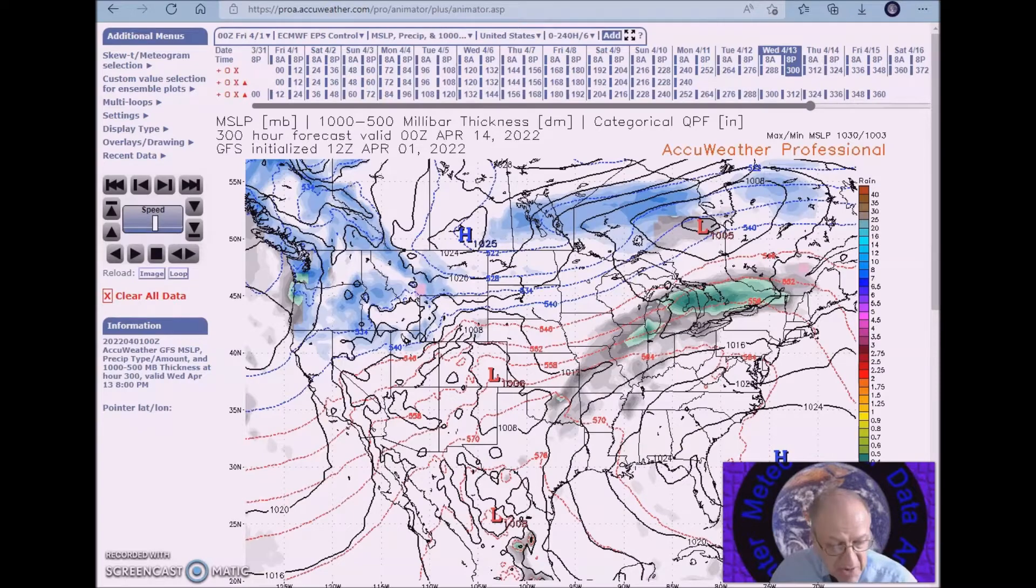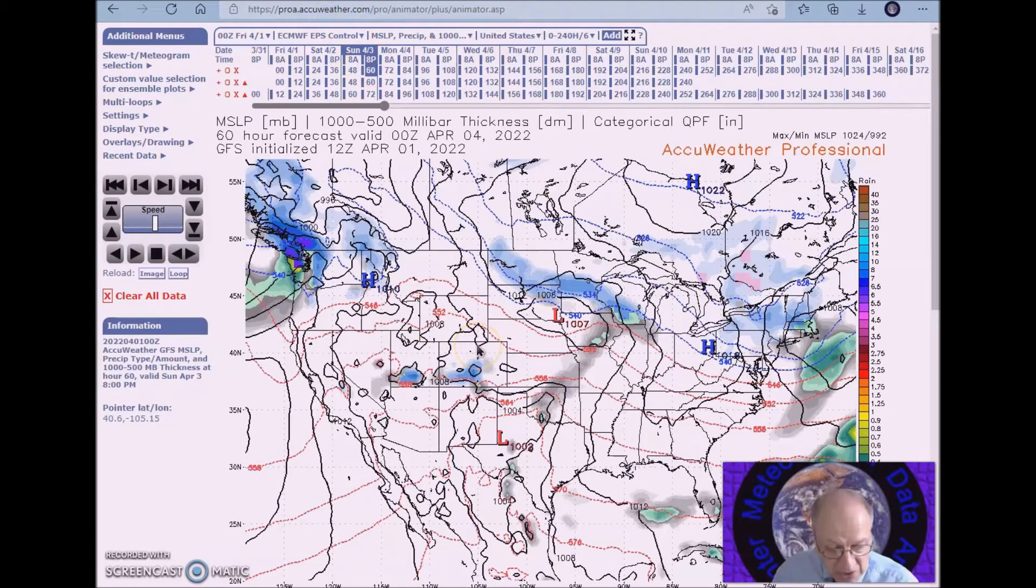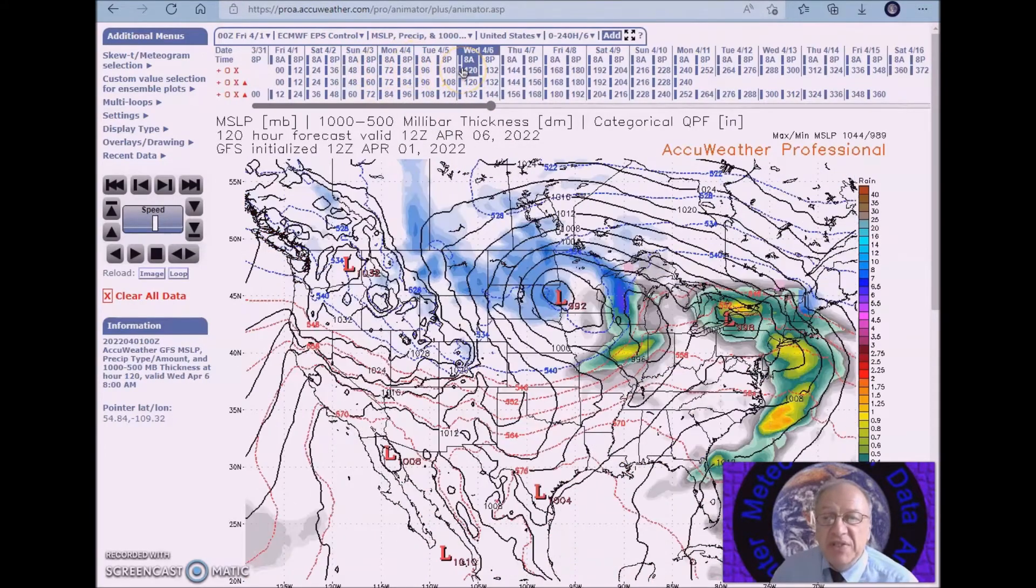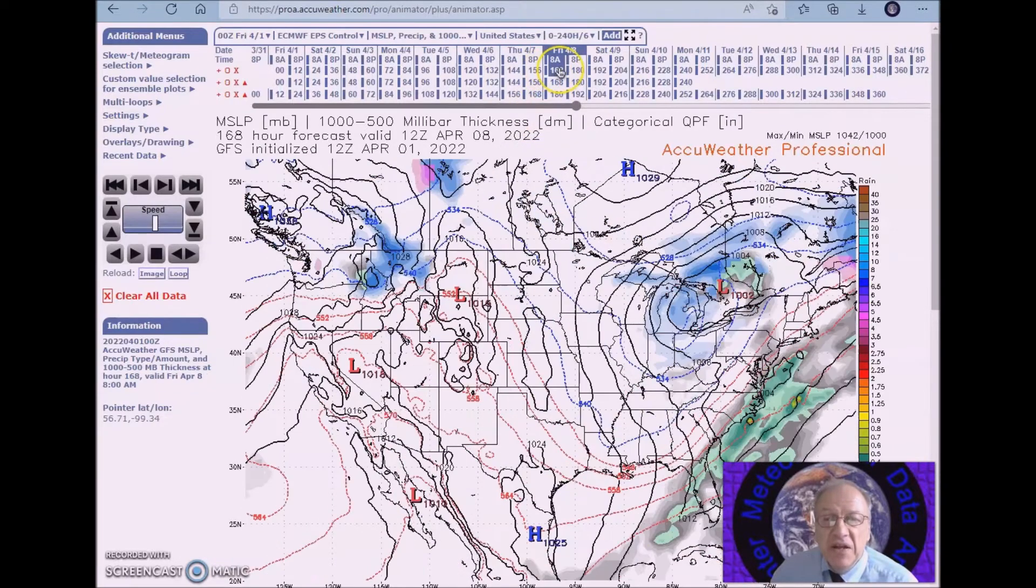That will be moving from the northern plains—you see here with the surface low—into the Great Lakes by Wednesday. We'll fast forward to Wednesday and this is what we have. We have a system here, and we will have some snow on the back side, rain here, then we have a strong Pacific jet.